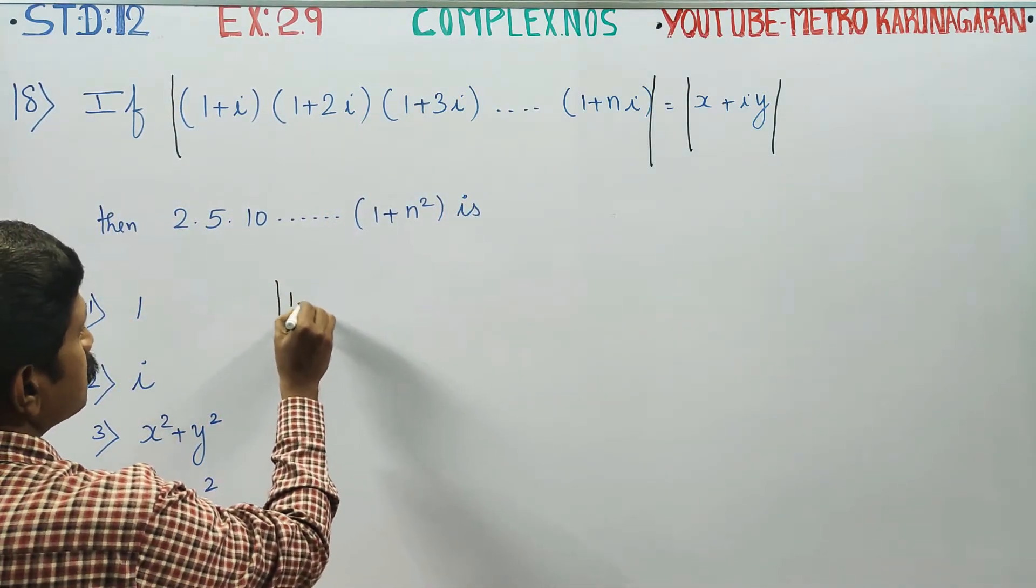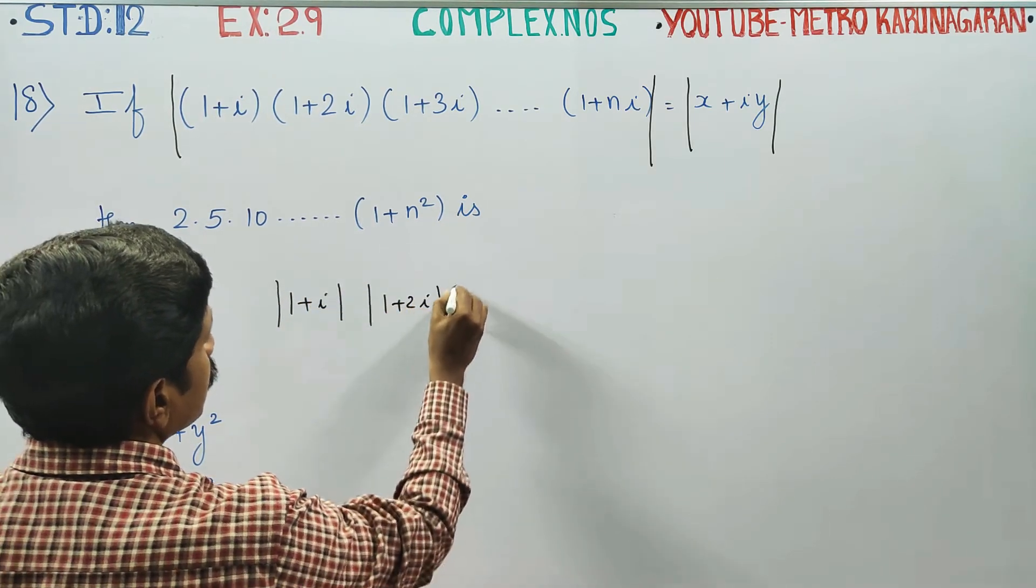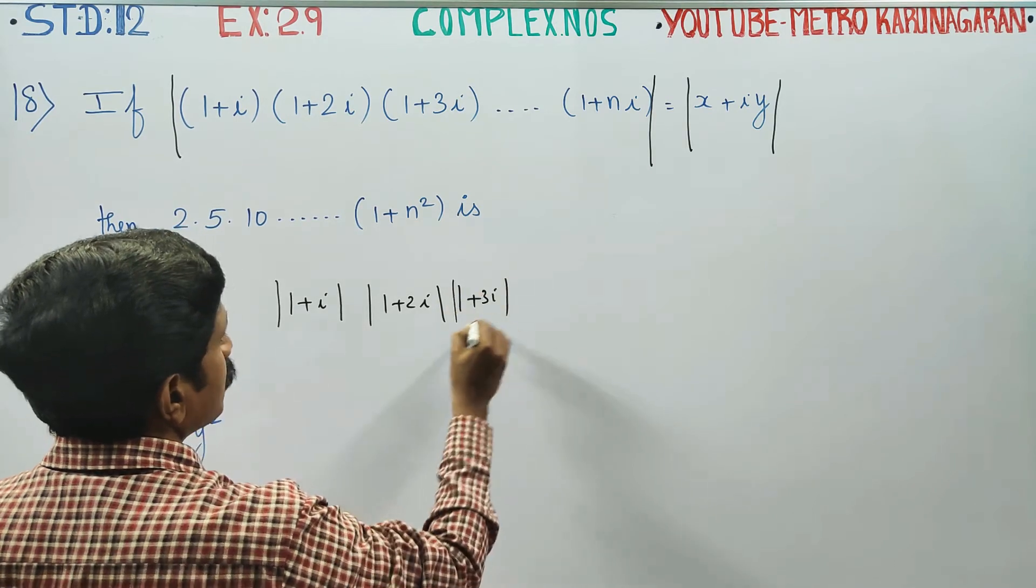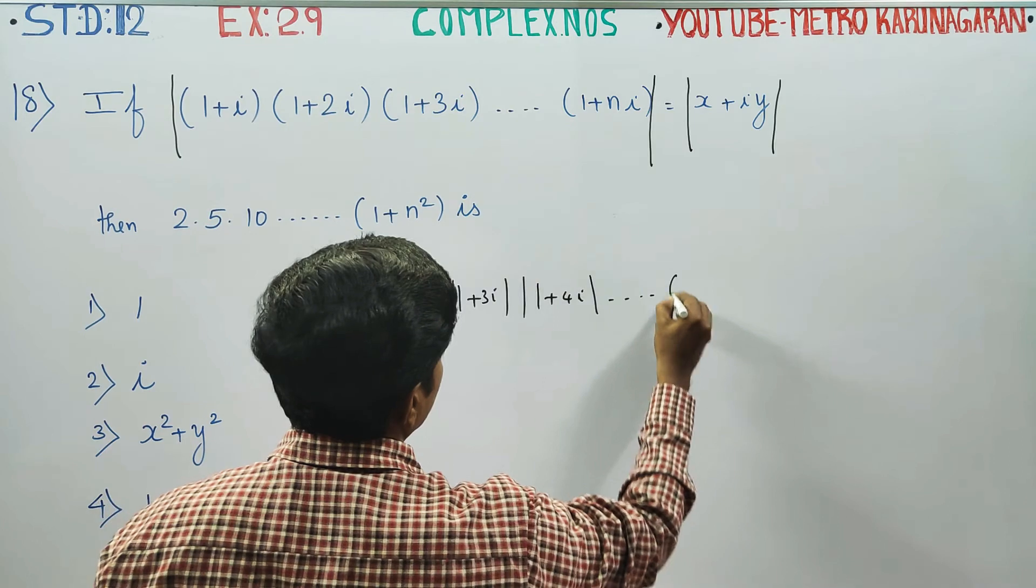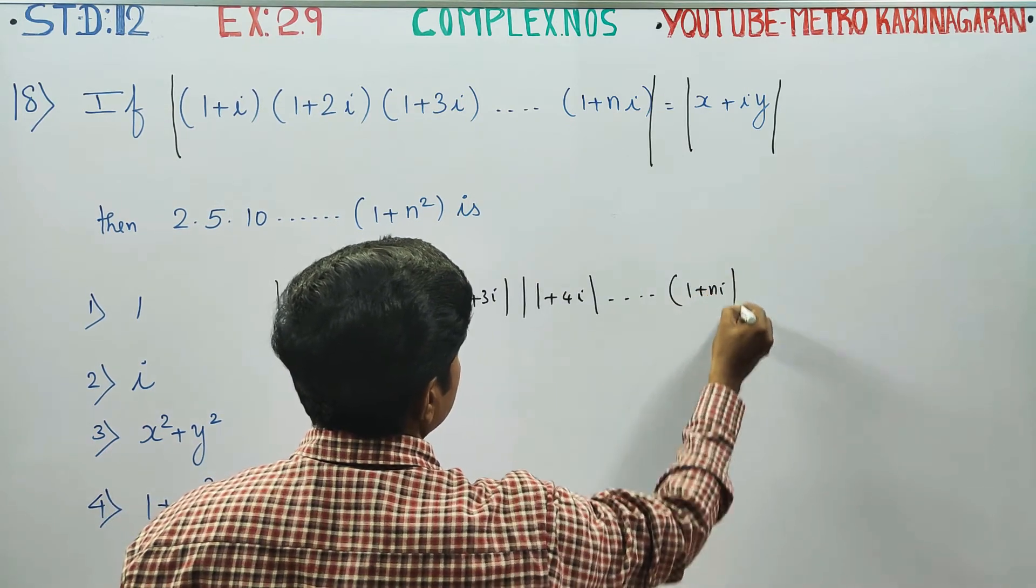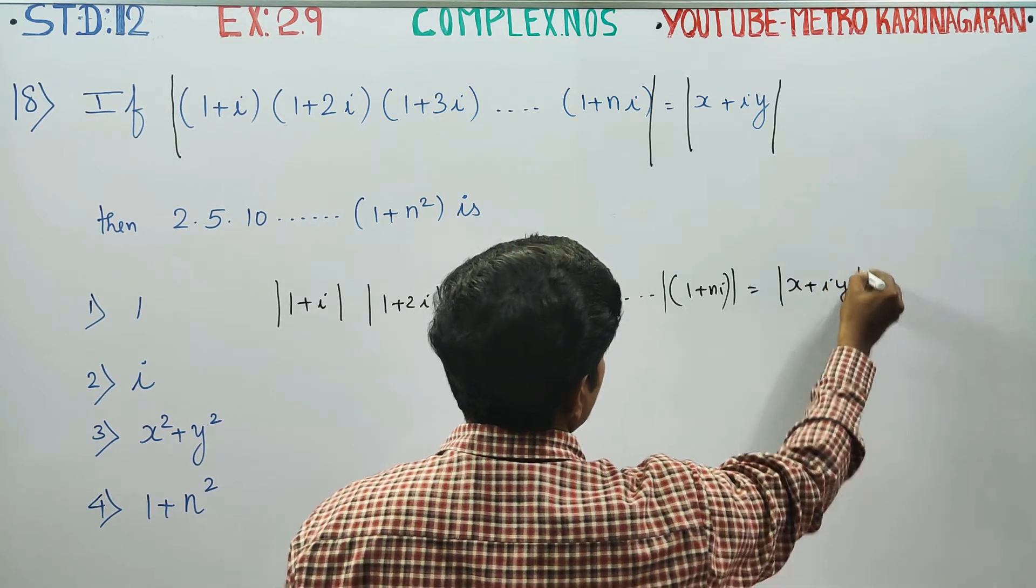It becomes modulus of (1+i), again (1+2i), again (1+3i), again (1+4i), dot dot dot (1+ni). So this is the modulus of x plus iy.